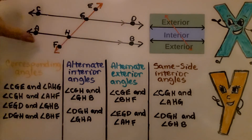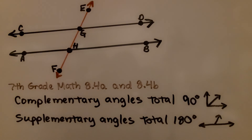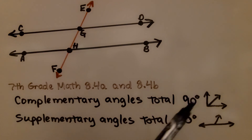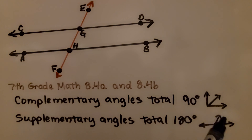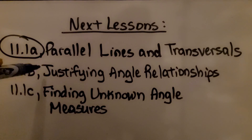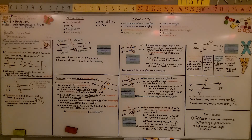If you can remember the exterior and interior, that's really going to help you. Back in seventh grade math, chapter 8, lessons 8.4a and 8.4b, we learned about complementary and supplementary angles. Complementary angles total 90 degrees and supplementary angles total 180 degrees. If you didn't learn that last year or have forgotten, those videos are linked in the description. We're finished with part A and moving on to part B — justifying angle relationships. I hope you understood this and will join me for the second part of the lesson. Bye!